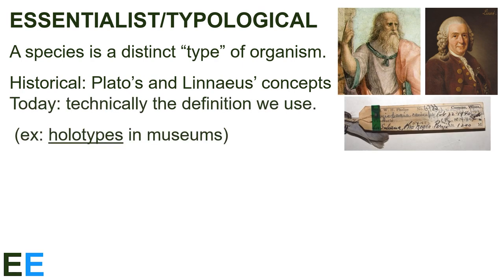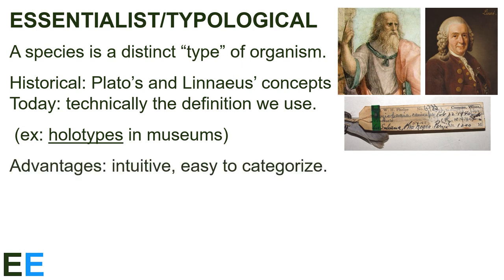Even today, this is technically the definition we use. Whenever a new species is discovered and named, part of that process is to deposit a single individual that represents the species in a museum. This is so that other scientists can check their possible new species against the individual in the museum to see if theirs is different or not. These single individuals are called holotypes. These days, there is a movement towards depositing sets of individuals to reflect the variation within the species, but many species we'll still talk about today are defined based on a single holotype. The advantages of this definition are that it's intuitive — it seems like common sense that different species are different separate types of organisms — and that it makes it easy to categorize species.